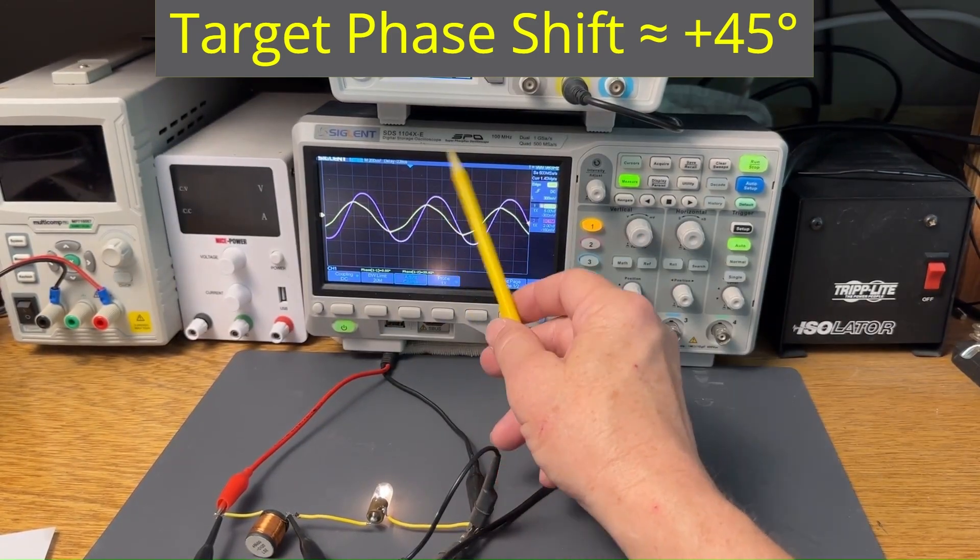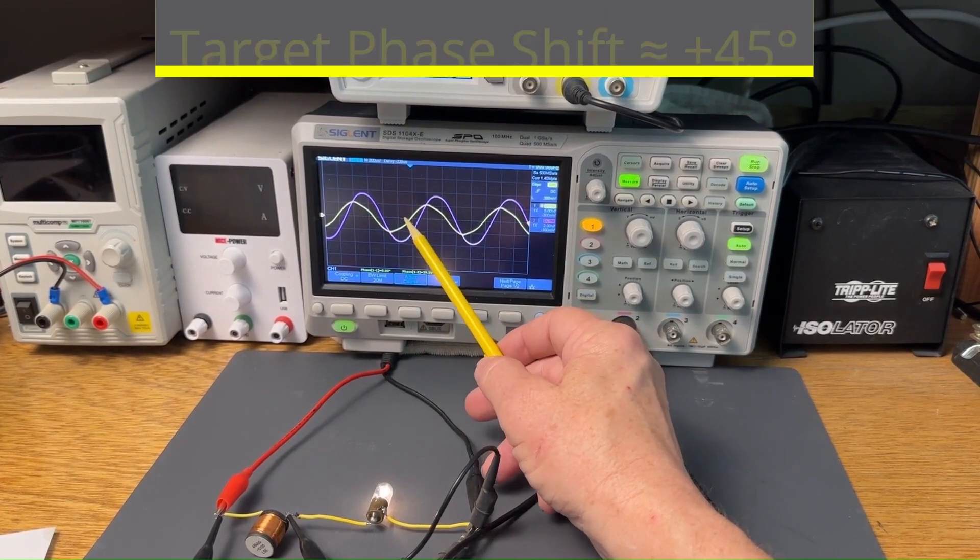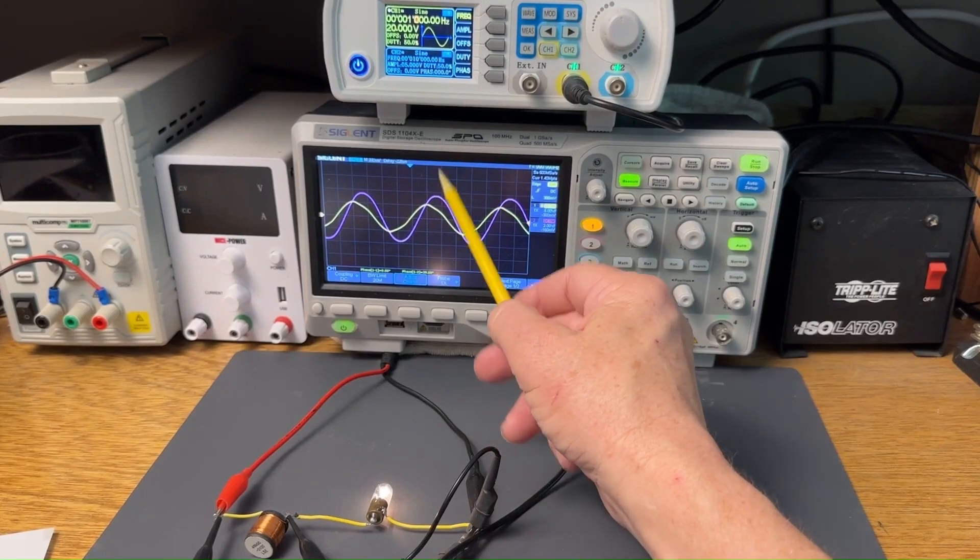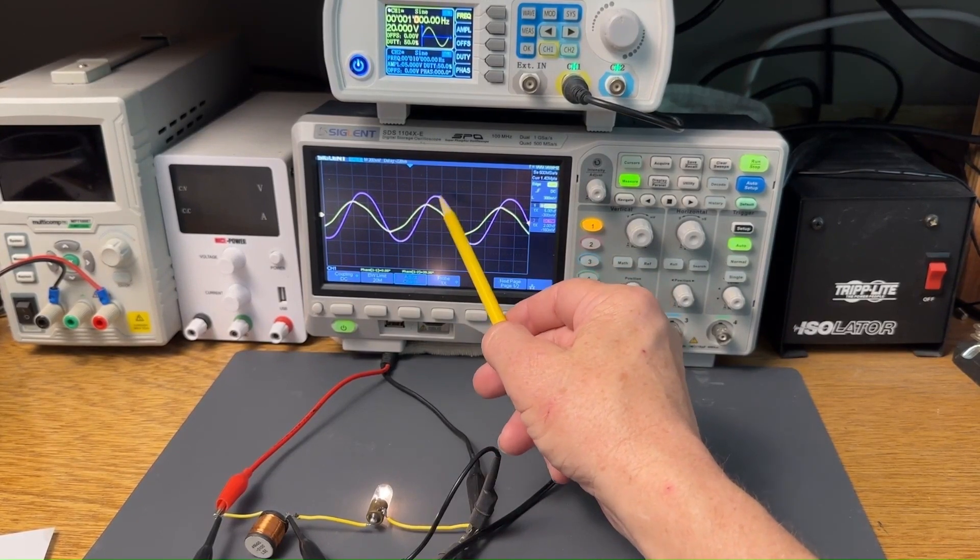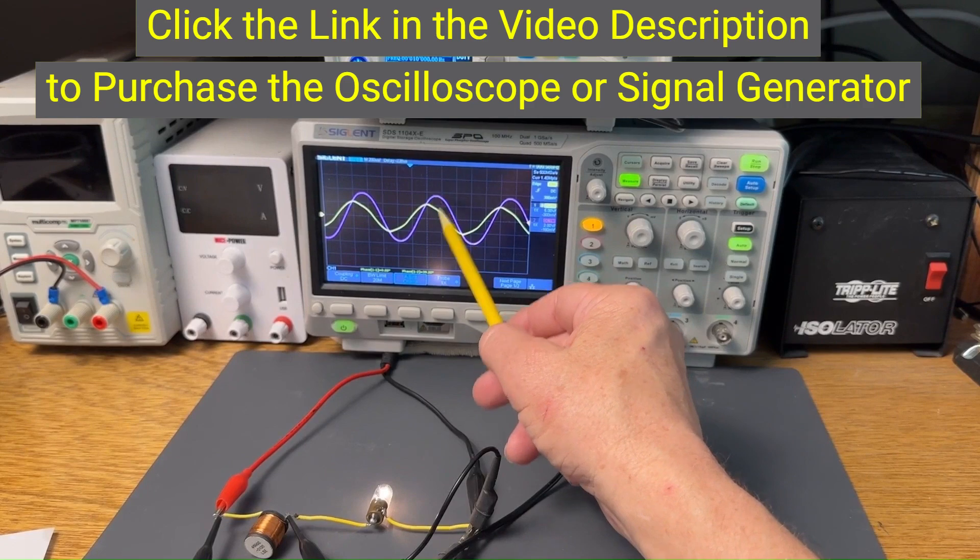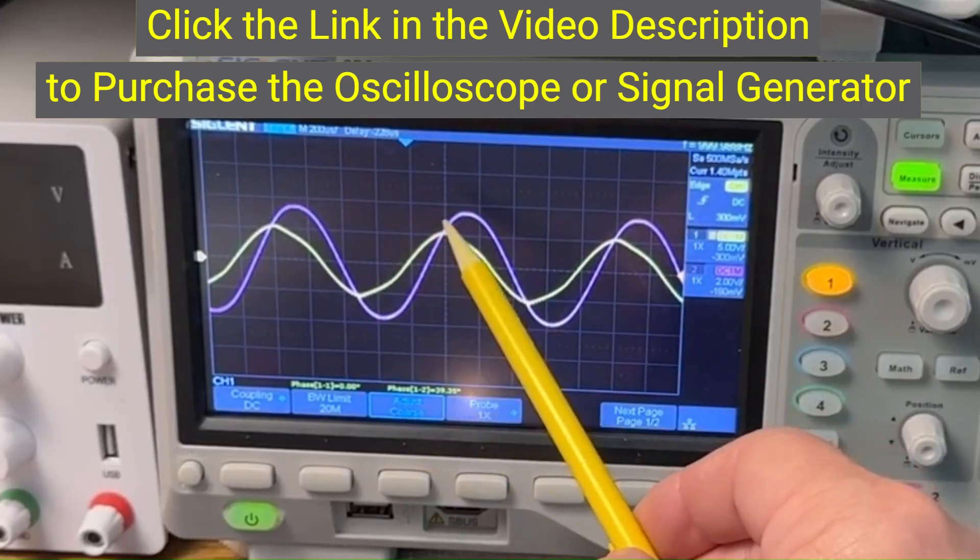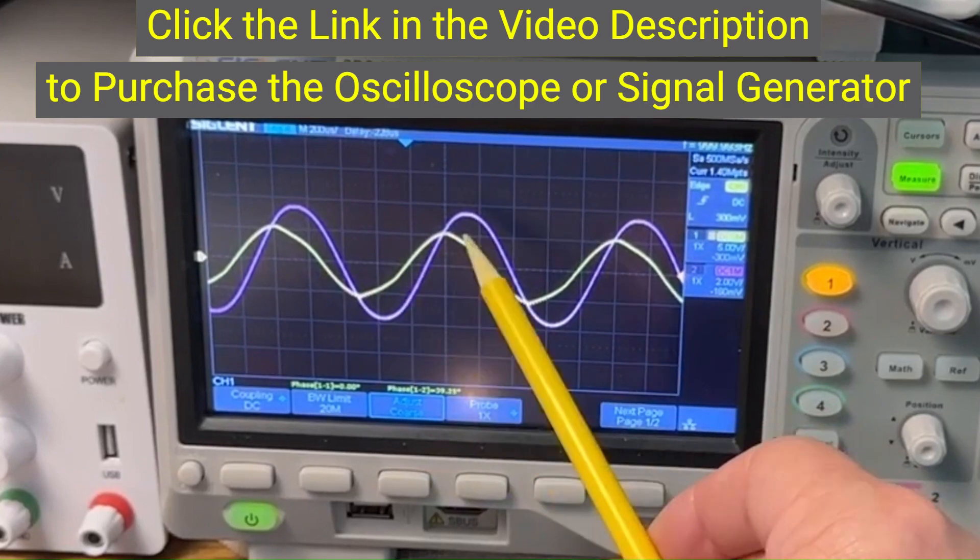If we look at the oscilloscope, you'll see two traces here. The yellow trace is the supply voltage to the circuit, and the purple trace is the current through the circuit. This current is calculated using the voltage across the bulb in Ohm's law. Notice how the two traces are offset. The yellow trace, the voltage, leads the purple trace, the current.